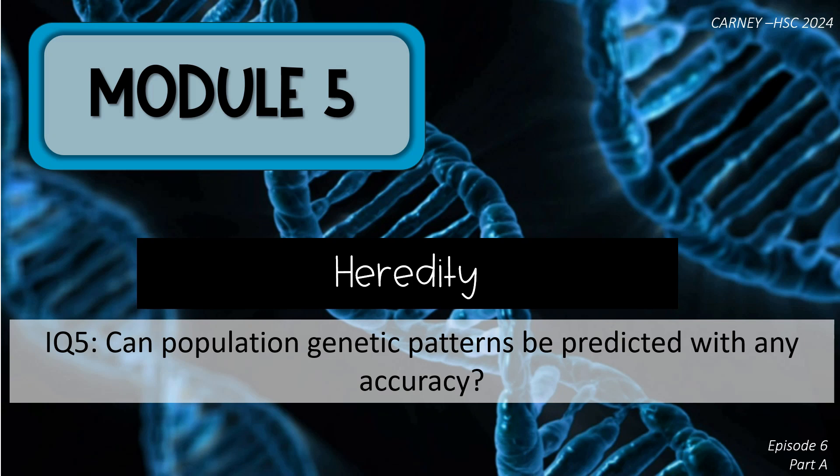Welcome to Episode 6, Part A of Module 5 Heredity. We're looking at Inquiry Question 5: Can population genetic patterns be predicted with any accuracy?